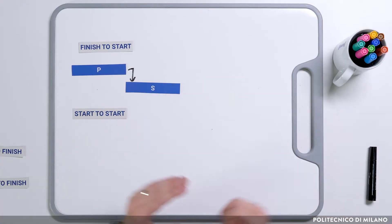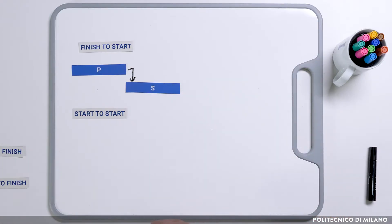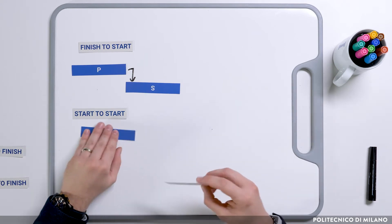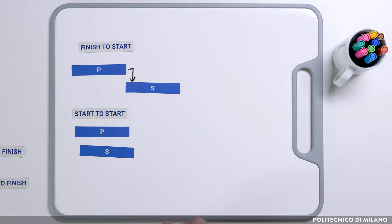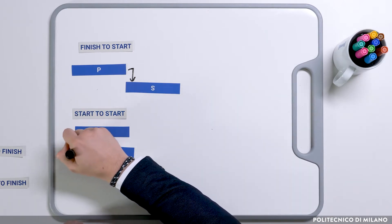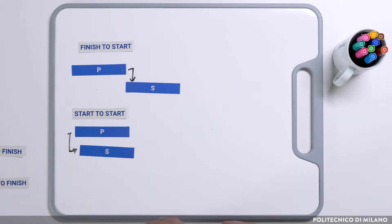The arrow represents the logical relations among activities. A second type is start to start: the predecessor must start before the successor can start. For example, road excavating must start before asphalt can be laid.